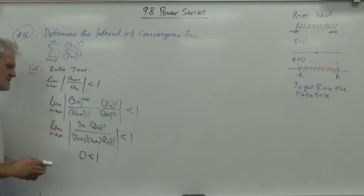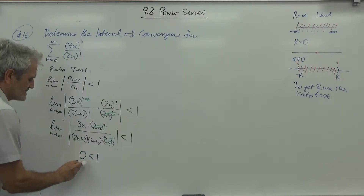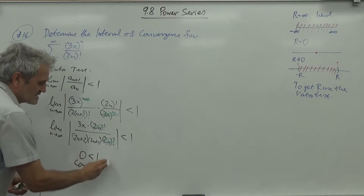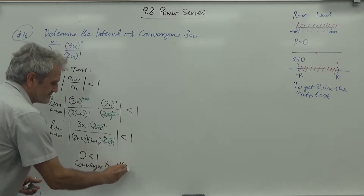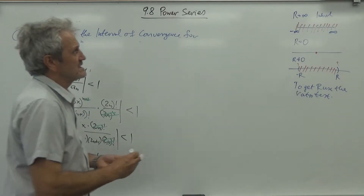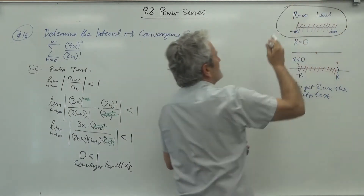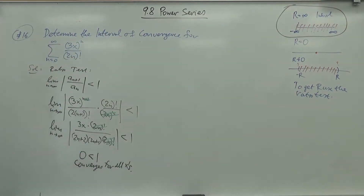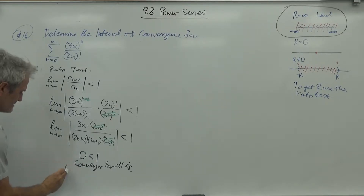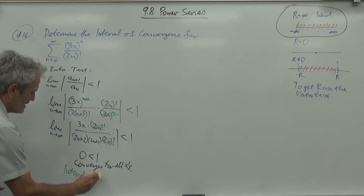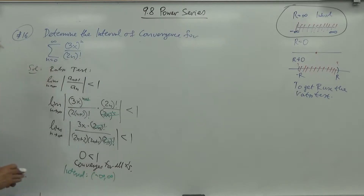Since the limit is 0, which is less than 1, we get convergence for all x. The interval of convergence is negative infinity to infinity.